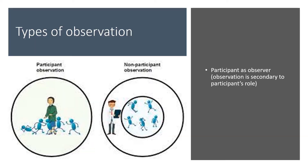The second type is the participant as observer, where observation is secondary to the participant's role. The advantage of this method is that unusual aspects can be noticed during observation. However, the disadvantage is that the researcher may not have good attending and observing skills, since they are distracted by their own role as the participant.